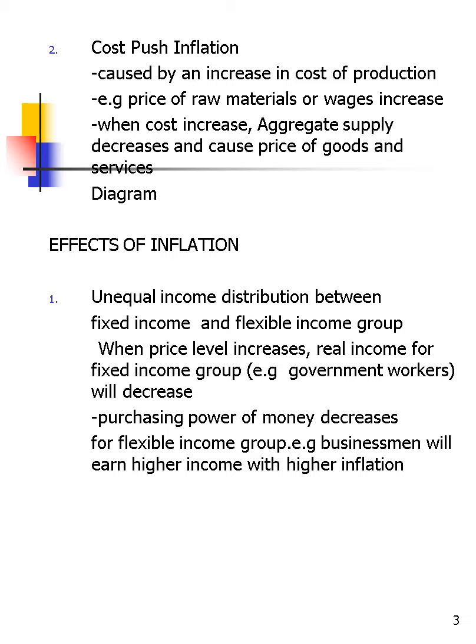When inflation happens, what are the effects on the economy? The first effect is unequal income distribution between fixed-income and flexible-income groups. When the price level increases, real income for fixed-income groups — for example, government workers — will decrease, reducing their purchasing power. For the flexible-income group, such as businessmen, inflation is actually beneficial because they will earn higher income.